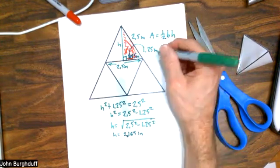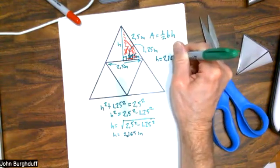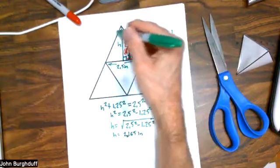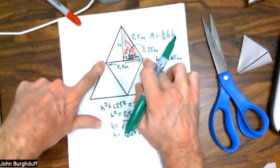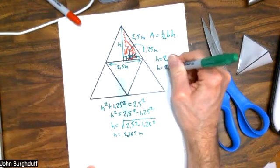Now that I have that, that's my H. Since I'm looking at this entire triangle, the base of that triangle would be this length from here to here. That's going to be 2.5 inches.